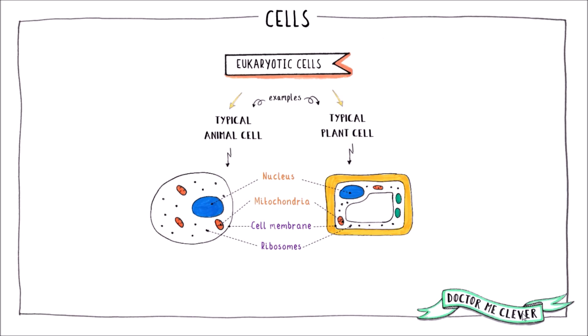Ribosomes represented here by the little black dots are where proteins are made in a process called protein synthesis. And a cytoplasm which is the gel-like substance where most of the cell's chemical reactions take place.